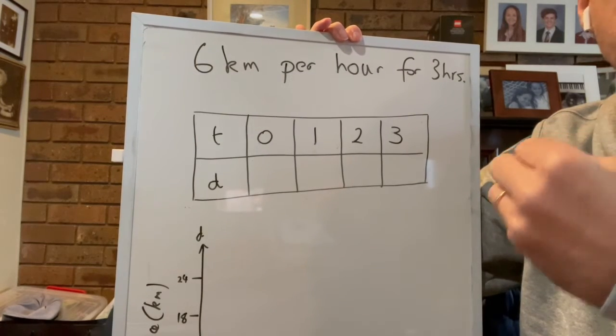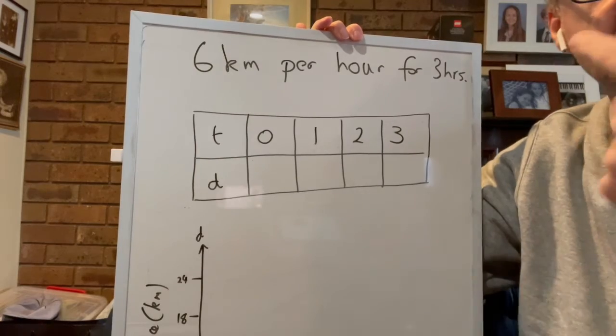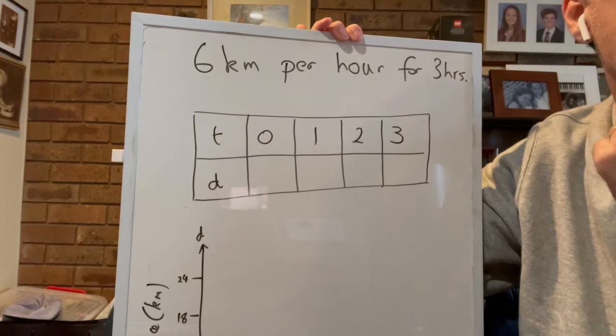Something where we start at a certain point, whether that be zero or whether that be at its peak, and you're either increasing in value or decreasing in value by typically a steady rate.